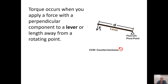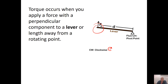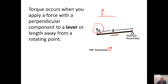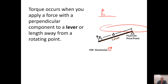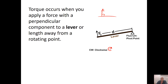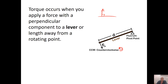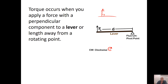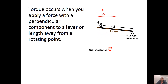Torque occurs when there's a force perpendicular — at 90 degrees — from a lever. Here's your lever at a distance length from the fulcrum. If you have at least a component of force that is perpendicular, then you're going to have torque created.